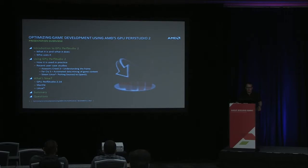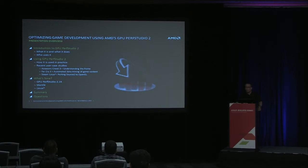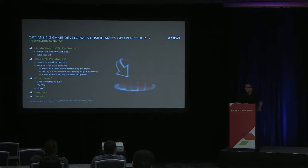I actually want to do three case studies: how it was used on Assassin's Creed 3 — in particular, how they used it to understand the frame — how it was used on Far Cry 3 and how you can use automated data mining, a feature of our tool, to locate assets in your game where you may not necessarily know where they are. And then I want to talk about the work that Valve have been doing using our tool to port the Source 2 engine to OpenGL on Linux, and talk about what's new and up and coming for PerfStudio in terms of Mantle and Linux support.